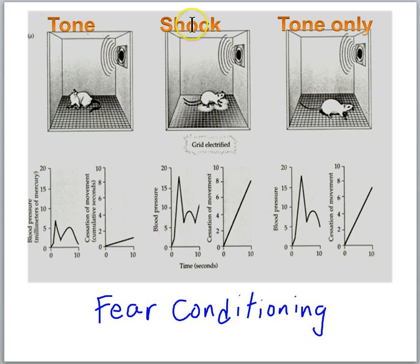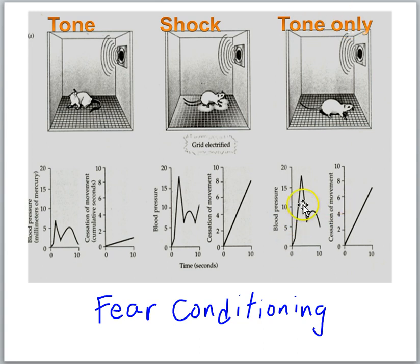The shock initially has the power to generate the fear response. If we pair the tone and the shock repeatedly and then play the tone alone, what we have is a conditioned response. The animal shows a high blood pressure spike to the tone and it freezes. In the animal's brain, the tone is predicting the shock, so it's showing fear to the tone. This is fear conditioning.